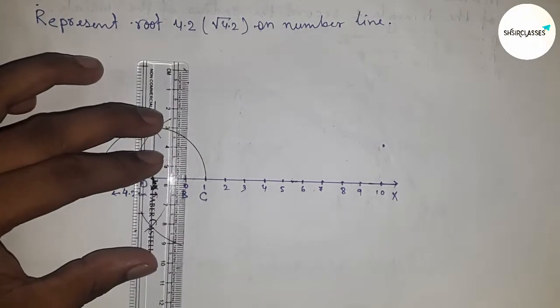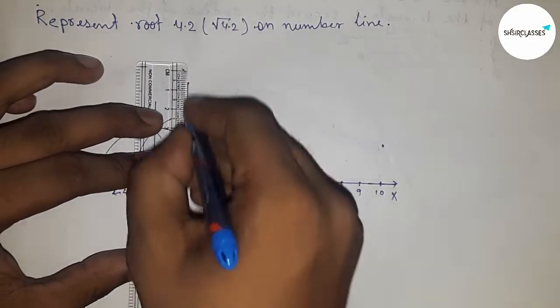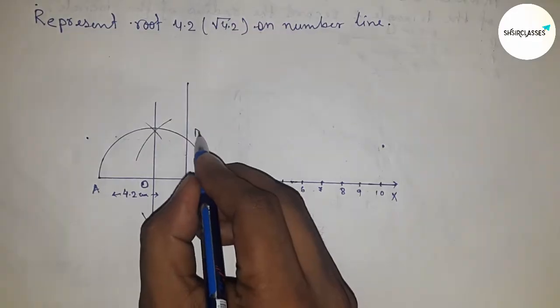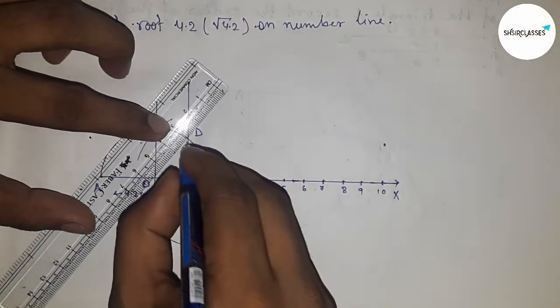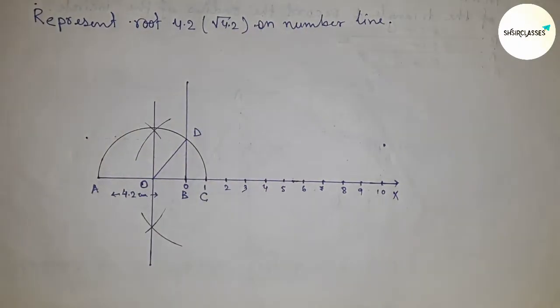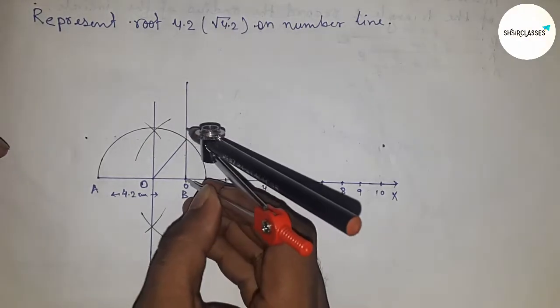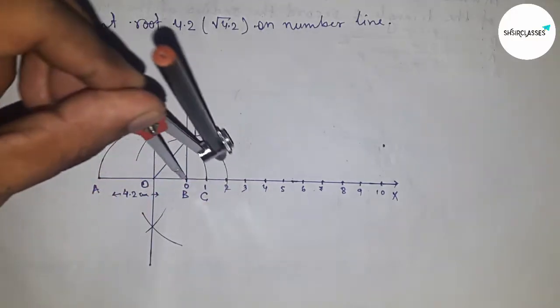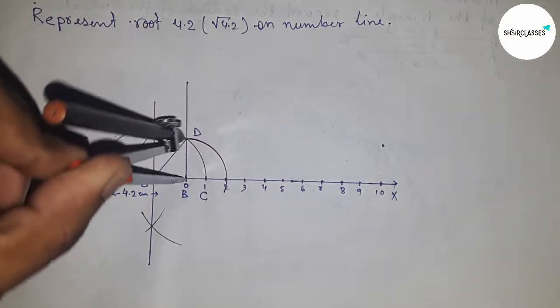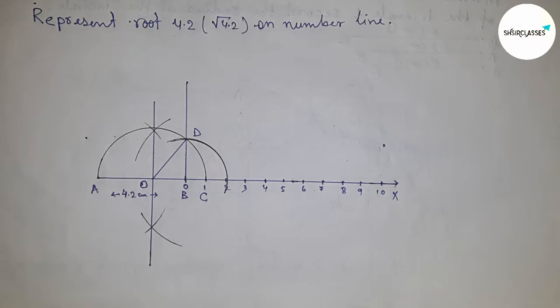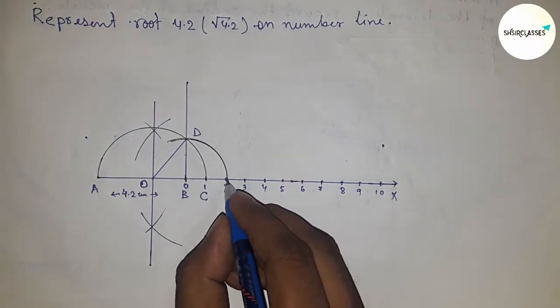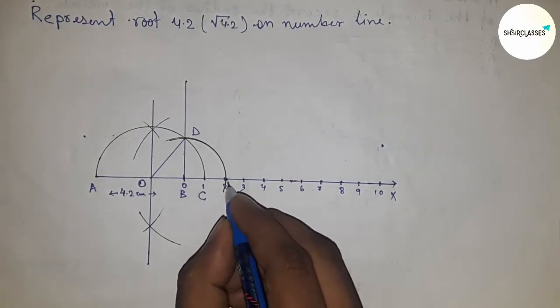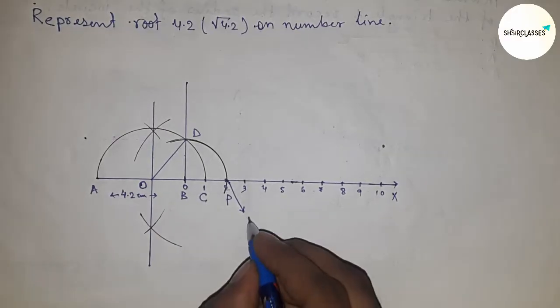So joining this and got 90 degree angle which intersects at point D. Next, joining BD. Then taking the length BD and drawing an arc which cuts the number line at point P. And this is the representation of root 4.2.